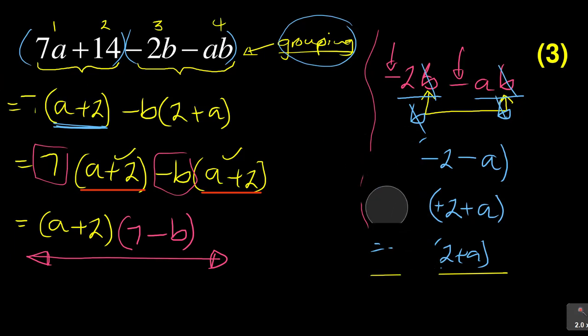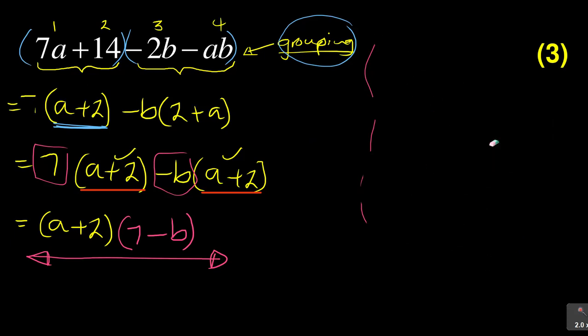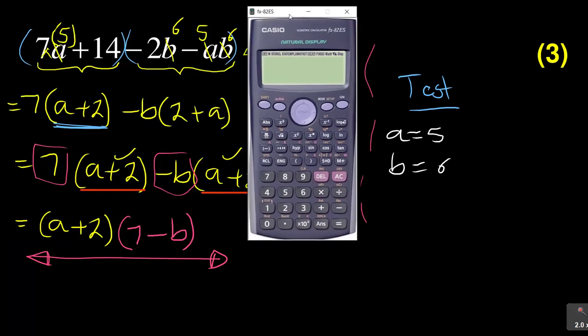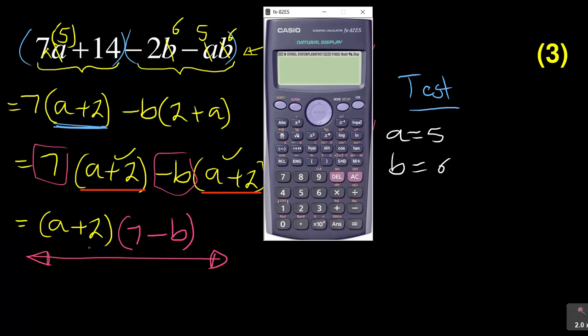Also, if you want to test it, you can test that. How can you test it? You choose any two values that you want of a and b. So if we go for a test, just to check if you did the right factorization, you can say maybe let my a become 5 and my b become 6. I'm just choosing any two random numbers. So where there is a, I put a 5. Remember you must introduce a bracket or times there. Where there is b, I put a 6.